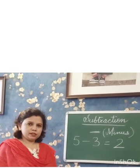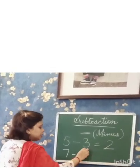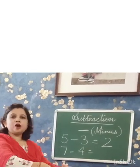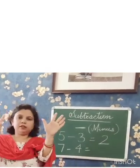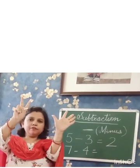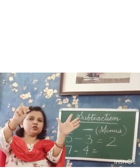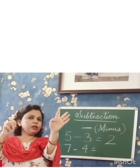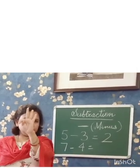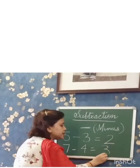Is it clear? 7 minus 4. This is 7. From 7 we take out 4: 1, 2, 3, 4. How many are left? 1, 2, 3. So the answer is 3.